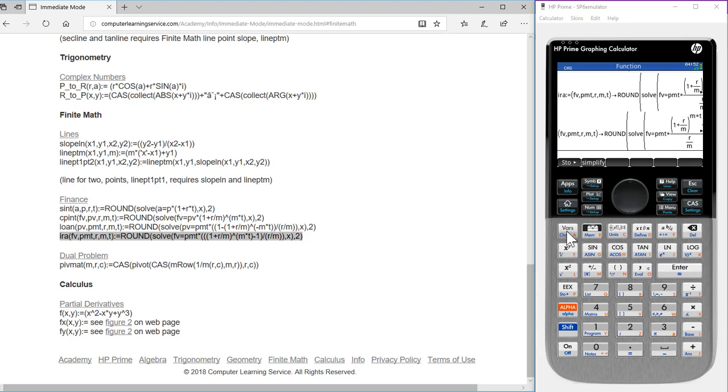One last thing. Let's press the VAR command, hit the CAS button, hit the program button, and we see that we have compound interest, IRA, loan, and simple interest all added to our calculator.